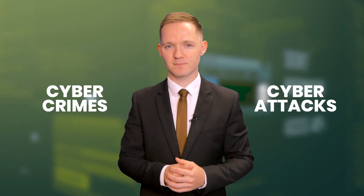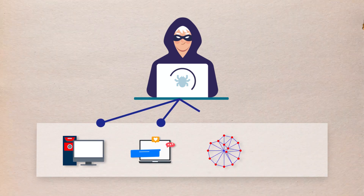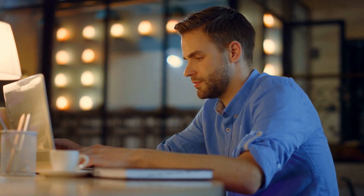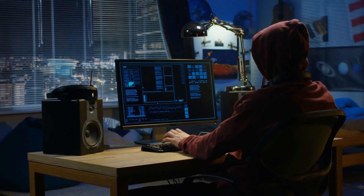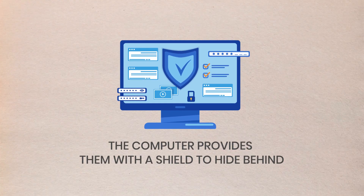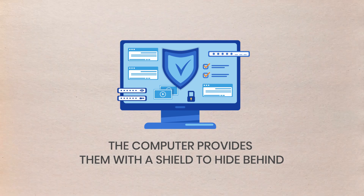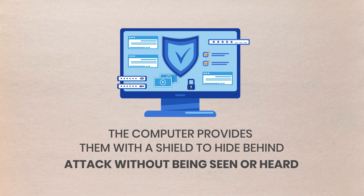So far, you've learned about what cybersecurity is, its different types, and its importance. Now we will discuss cybercrimes and cyberattacks. Cybercrime is defined as any criminal conduct involving a computer or digital media and a network, most commonly the internet. Anyone can become a criminal through cybercrime, including those who are technically inept, lack the confidence to challenge another person, lack the guile of a fraudster, or are otherwise unable to be criminals in the traditional sense. The computer provides them with a shield to hide behind, as well as the ability to attack without being seen or heard, being near the victim, or having any relationship with the victim.